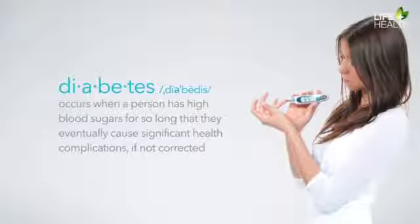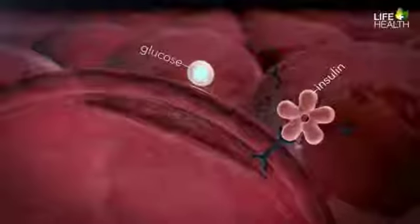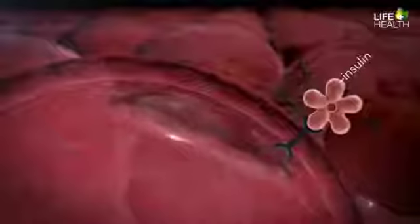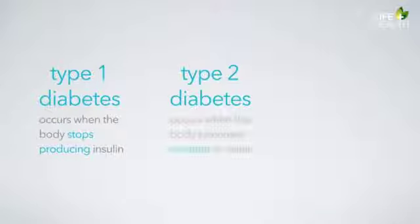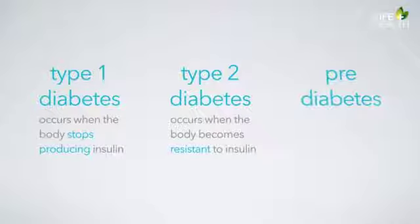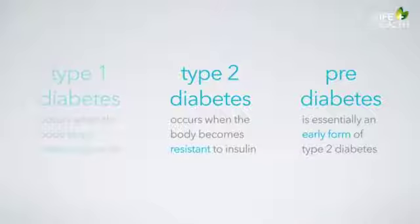Let's review what we've learned. Diabetes is a disease characterized by high blood sugars. Insulin is a hormone that helps regulate blood sugars by unlocking the cells to allow sugar in. Type 1 diabetes occurs when the body stops producing insulin. Type 2 diabetes occurs when the body becomes resistant to insulin. And pre-diabetes is essentially an early form of type 2 diabetes. In this course, we will focus primarily on type 2 diabetes and pre-diabetes.